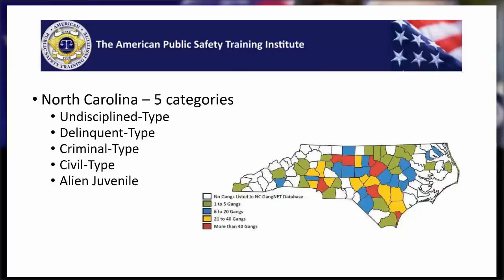For example, a fish and game violation or non-criminal traffic violation — say they got caught by a red light camera. And then last, we have an alien juvenile. This is a non-citizen juvenile under the age of 18 who hasn't been charged with any kind of offense.